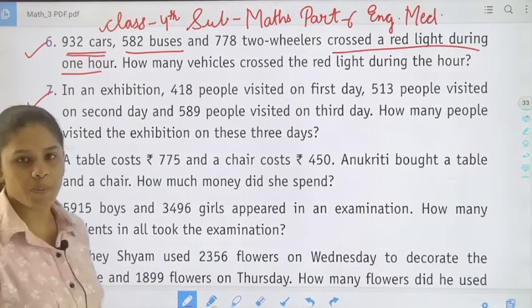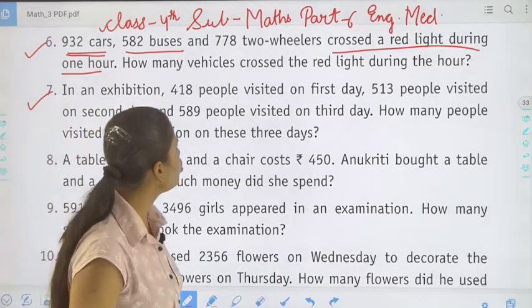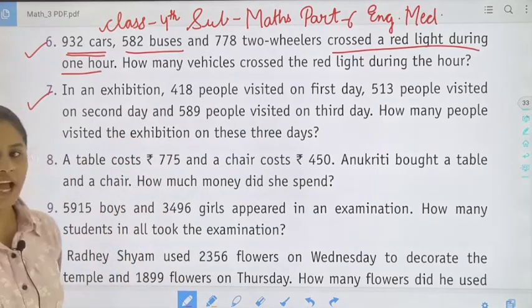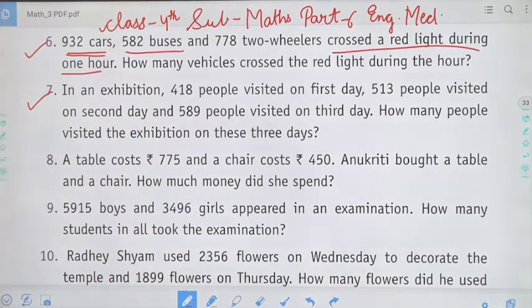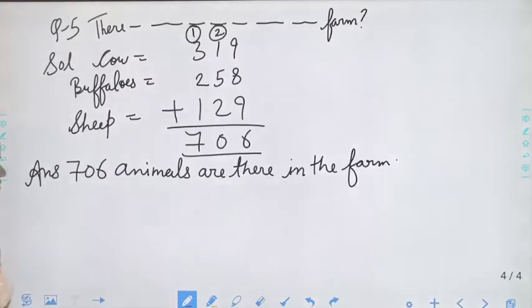582 buses, and 778 two-wheelers. Now we have to do addition. We have to find how many vehicles crossed the red light during the hour.